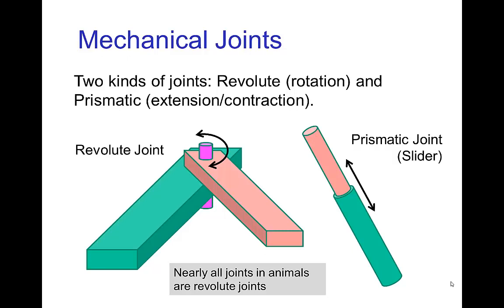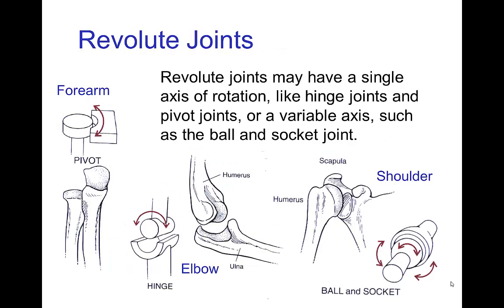In robots, there's another type of joint which is common called the prismatic joint, where something extends or contracts in length. Now, revolute joints have a variety depending on the axis of rotation. You could have something like the forearm which is a pivot joint, the elbow which is a hinge, or something with a variable axis such as the ball and socket joint in the shoulder.